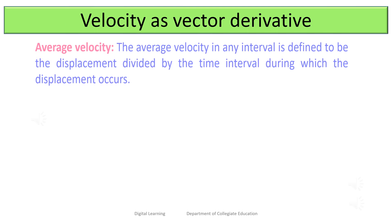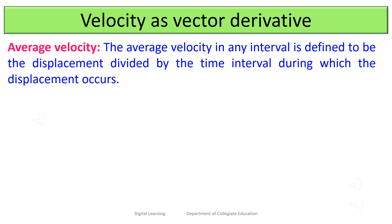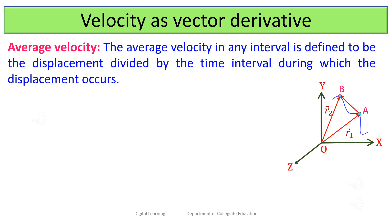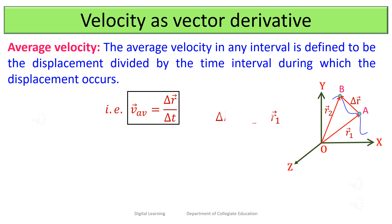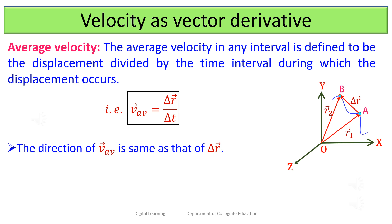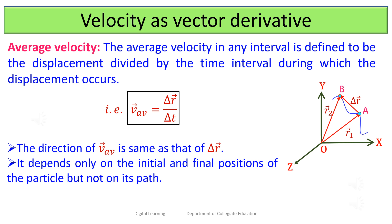The average velocity in any interval is defined as the displacement divided by the time interval during which the displacement occurs. If Δr⃗ represents the change in displacement in a time interval Δt, then the average velocity is v⃗_av = Δr⃗ / Δt, where Δr⃗ = r⃗₂ − r⃗₁ is the displacement vector when the particle moves from A to B. The direction of average velocity is the same as that of the displacement vector, and it depends only on the initial and final positions, not on the path.